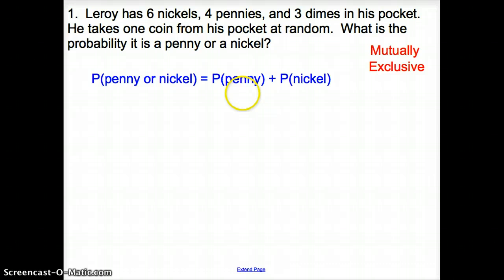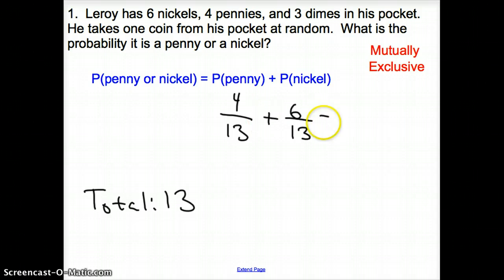So we are looking for the probability of a penny or a nickel. Now, what is the probability that it will be a penny? Well, how many pennies do we have? We have four pennies. But what's that going to be over? It's going to be over our total. And our total is going to be 13. All right, guys, we have to make sure we always know what our total is. Because more times than not, it is going to go on the bottom of our probability. So we have four thirteenths. Now nickels, how many nickels do we have? We have six nickels over the total amount of coins we have, which is 13. We add them together. So the probability of being a penny or a nickel will be 10 over 13.